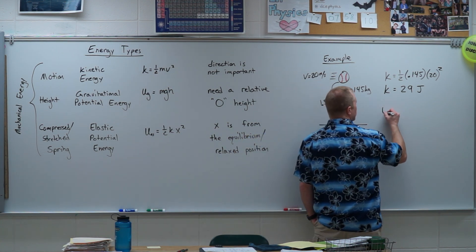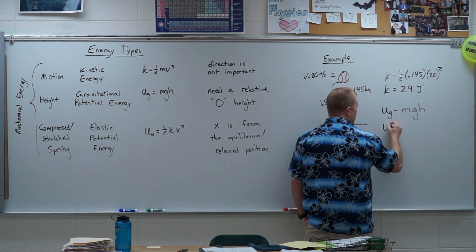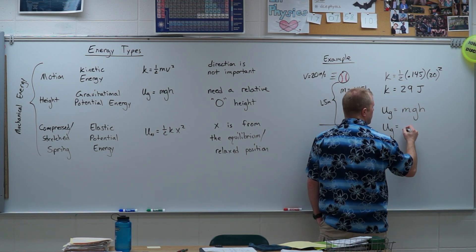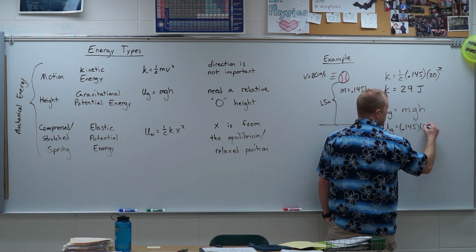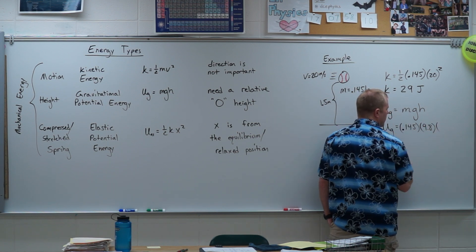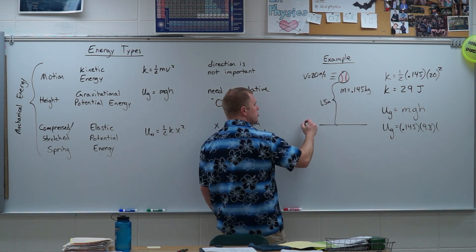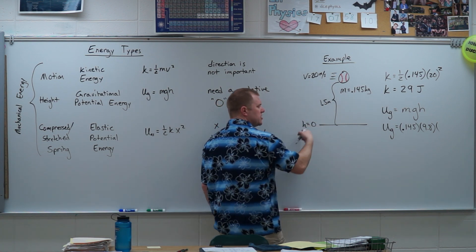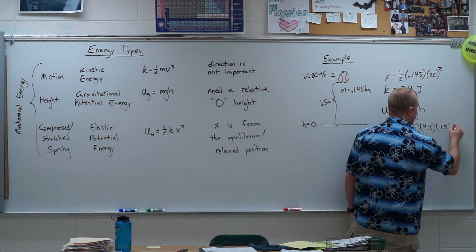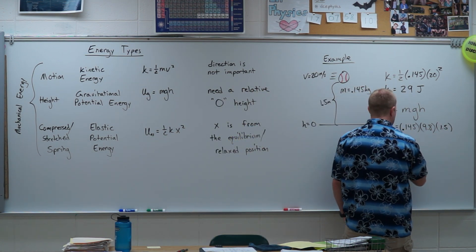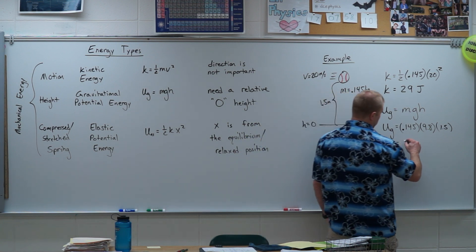It also has gravitational potential energy — mgh. So the gravitational potential energy is 0.145 times gravity, 9.8 here on Earth, times the height. In order to use that height, we needed to choose a reference height, so I chose the ground. That gives a gravitational potential energy of 2.1 joules.